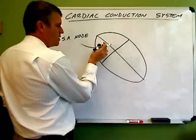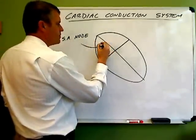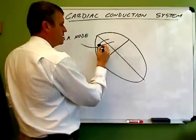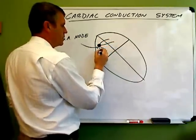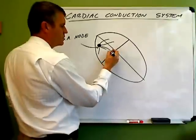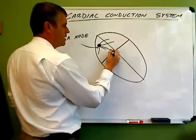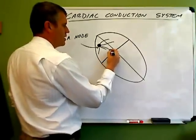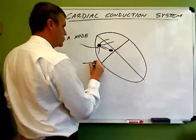When the SA node depolarizes, it has fibers that stretch out and stimulate the myocardium in the atria. And some of those fibers also make contact with the next node, which is called the AV node, the atrioventricular node.